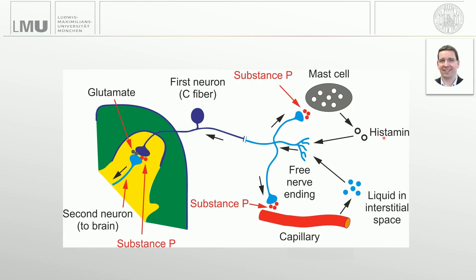Substance P activates mast cells, which release histamine, which can activate the free nerve endings. Substance P can also cause capillaries to put more liquid into the interstitial space, which can activate free nerve endings through swelling where there is no space in the tissue — for example, where tendons meet bone or at the periosteum. This creates a vicious circle in the periphery called neurogenic inflammation. The mechanism of action of capsaicin at the skin surface and of shockwave deep in the tissue is to overstimulate these C fibers to such an extent that they can no longer emit substance P, which blocks the neurogenic inflammation. This is why shockwave is so effective in treating tendinopathies and myofascial pain syndrome.